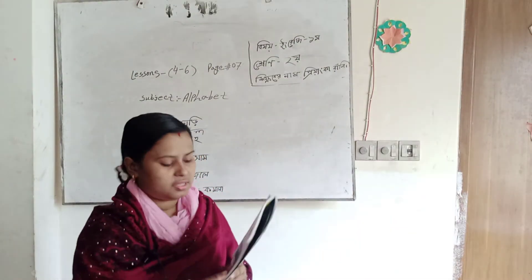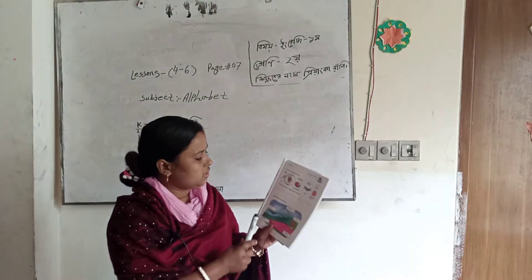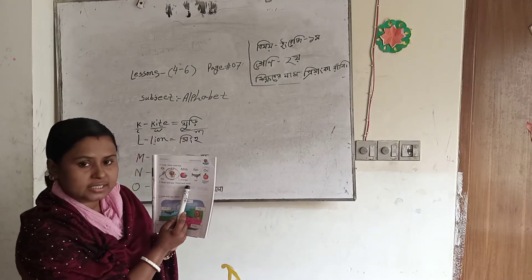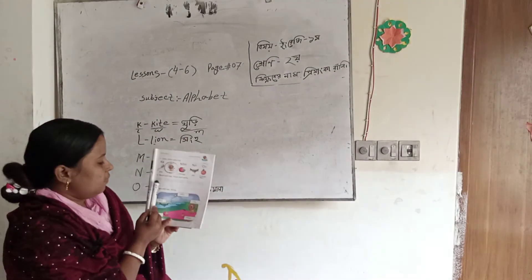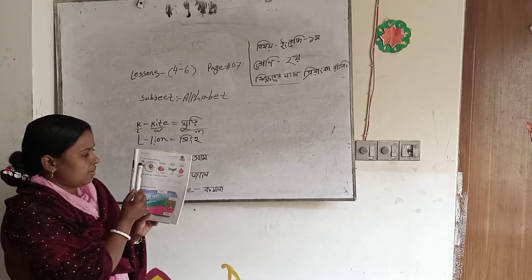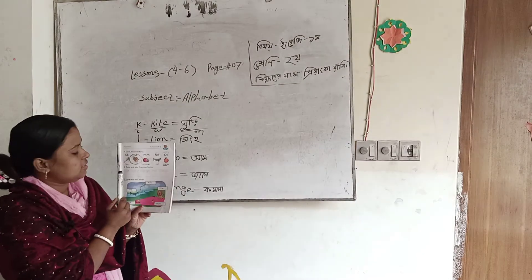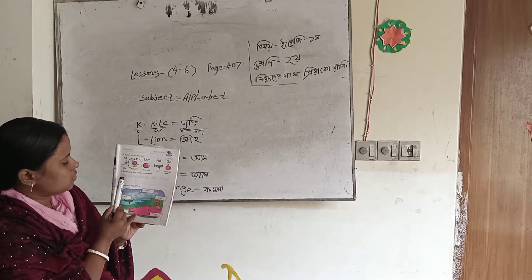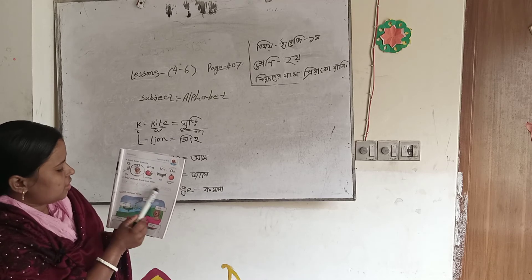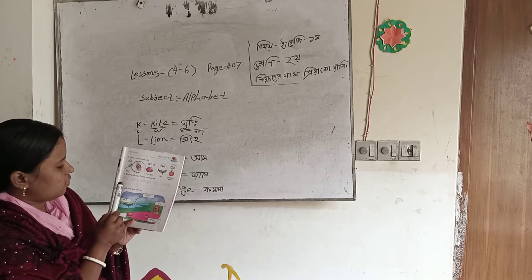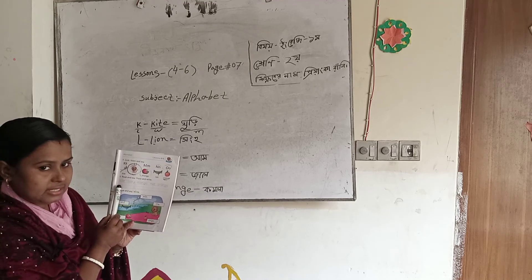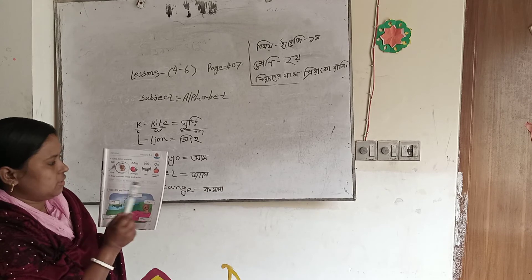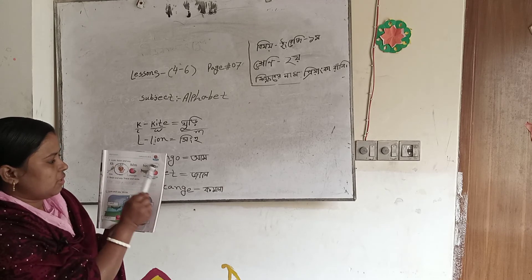Dear students, I'm going to arrange this class. I'm going to ask you to trace and write. In the next class, I'm going to ask you to read and trace and write: kite, lion, mango, net, orange. This is what I'm going to ask you.